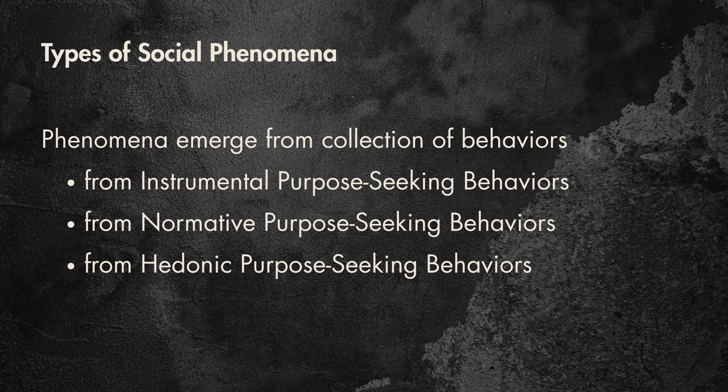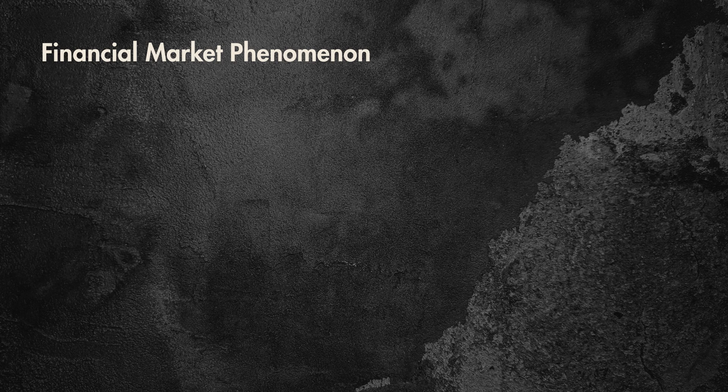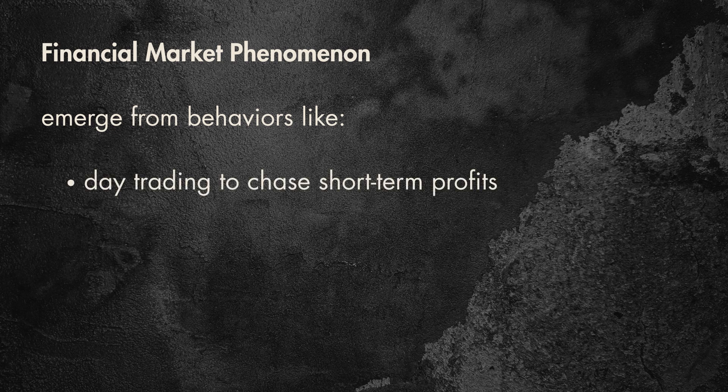This brings us to the types of phenomena. Just as Lindenberg suggested in Goal Framing Theory, we can think of any social phenomenon in the same structure, because those phenomena emerge from behaviors — so they should inherit their DNA. We have three types: phenomena emerging from instrumental purpose-seeking behaviors, from normative purpose-seeking behaviors, and from hedonic purpose-seeking behaviors. When we talk about financial markets, we can sense that it feeds on instrumental purpose-seeking behaviors — those driven by the pursuit of efficiency, control, and personal gain.